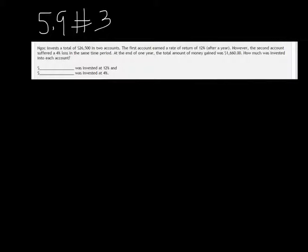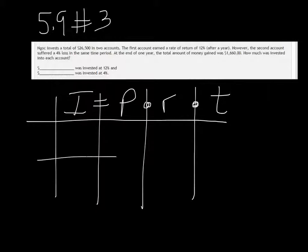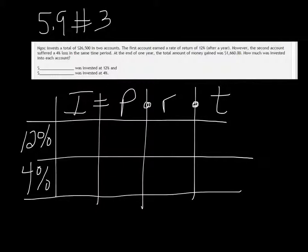I like to make a table with these. Interest equals principal times rate times time. And we have two accounts going on, we have a 12% and a 4%. We don't know how much went in each one, but we know the total principal of both accounts is $26,500.